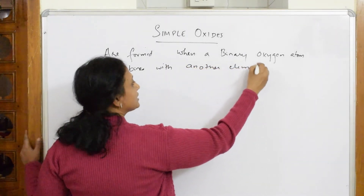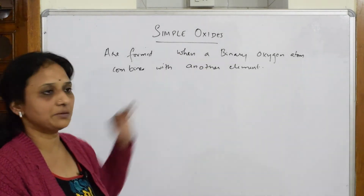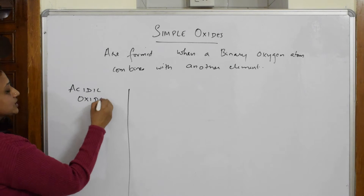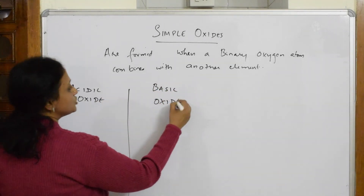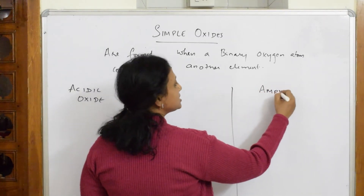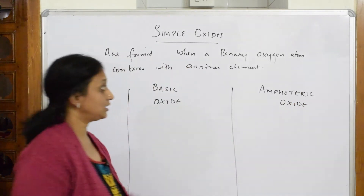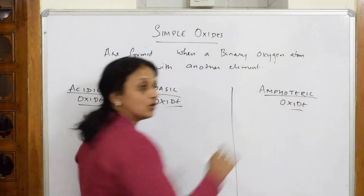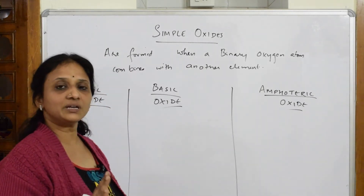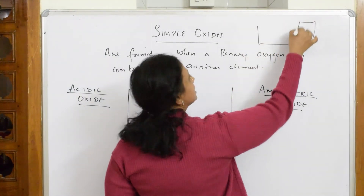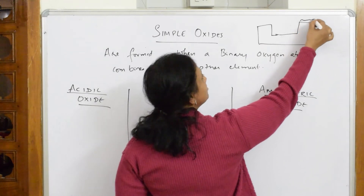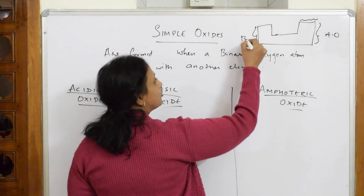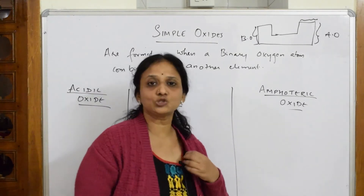Simple oxides are of three types. The first type is acidic oxide. The next type is basic oxide. The third type, which you have already studied, is the most famous aluminium oxide example — that is amphoteric oxide. Non-metals, which are at the right extreme of the periodic table, form acidic oxides. Metals form basic oxides, and aluminium oxide Al2O3 forms amphoteric oxides.